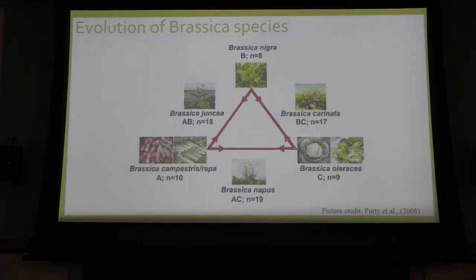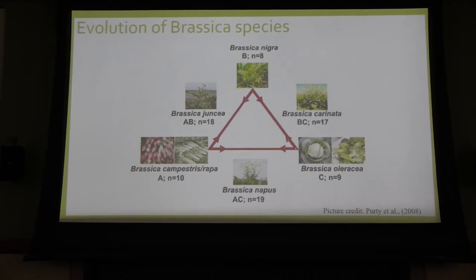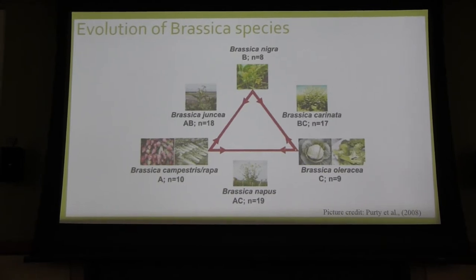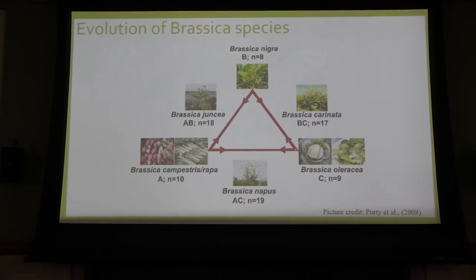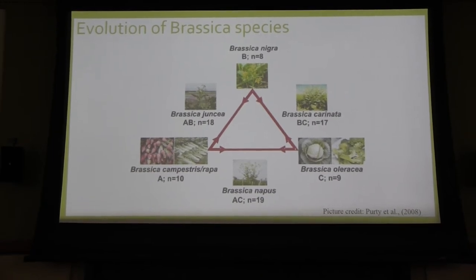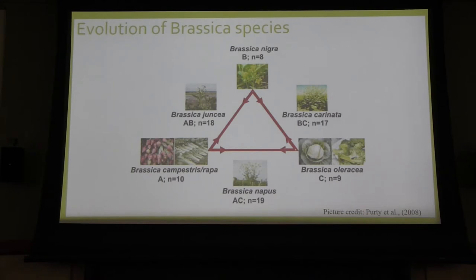This is the Triangle of U, which represents the relationship of six different Brassica species. There are three ancestral species — Brassica nigra, Brassica campestris/rapa, and Brassica oleracea — that have subgenomes B, A, and C, with chromosome numbers 8, 10, and 9 respectively. There are also three species that were created due to interspecific hybridization between two ancestral species.